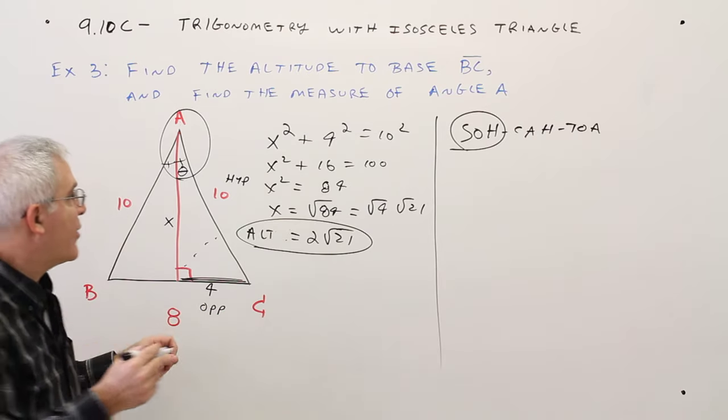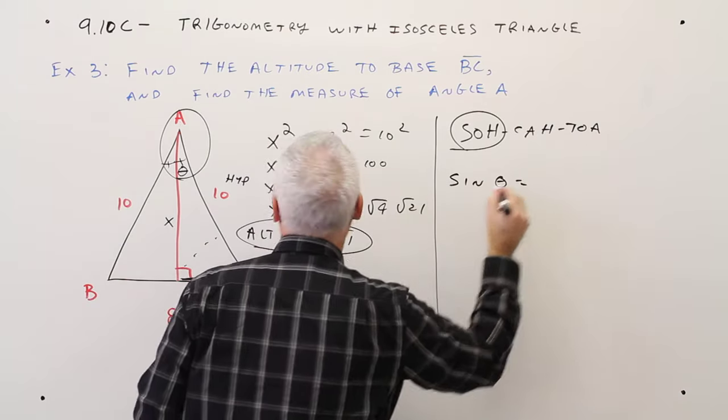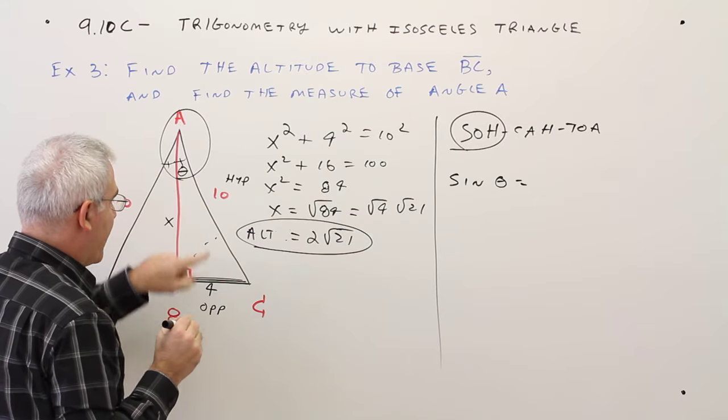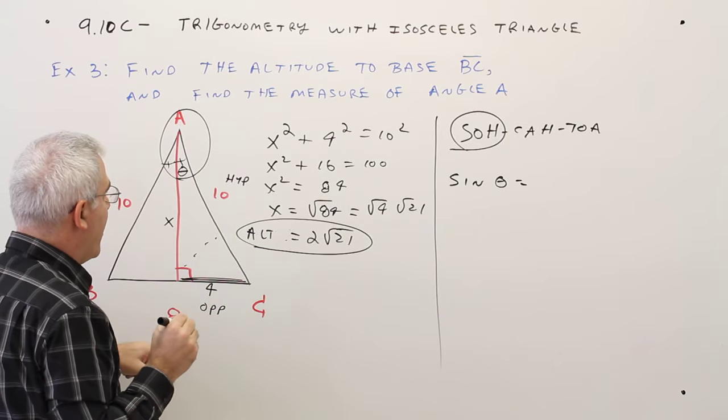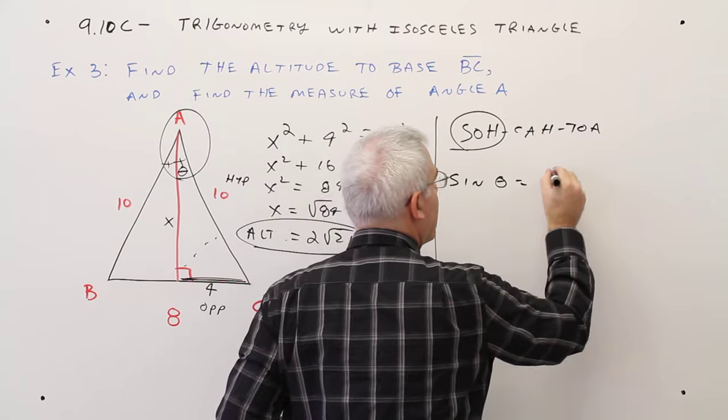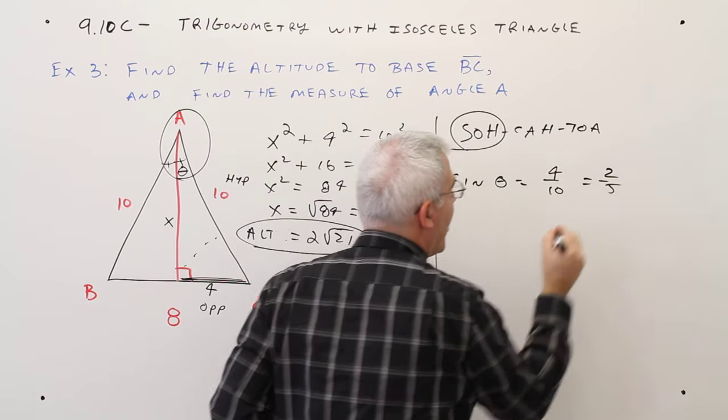So I'll write my equation. The sine of angle theta equals opposite over hypotenuse, 4 over 10. I could reduce that to 2 over 5 if I wanted to.